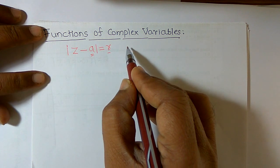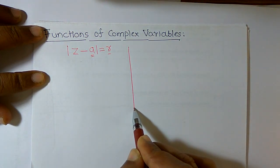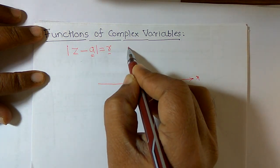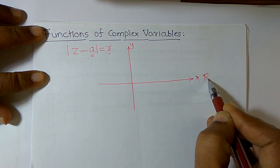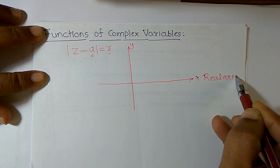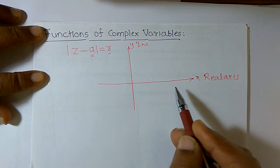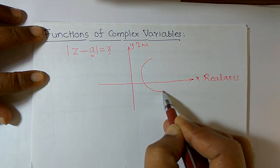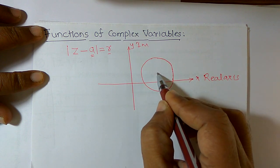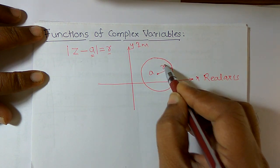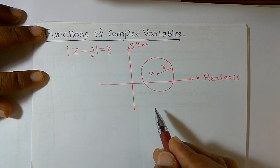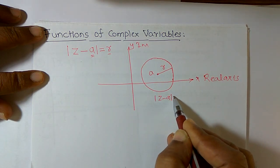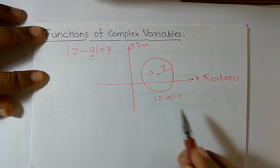I can draw the real and imaginary axis — this is the x-axis and y-axis, or the real axis and imaginary axis. This equation represents a circle with center a and radius r. So the general equation of this circle is mod of z minus a is equal to r.